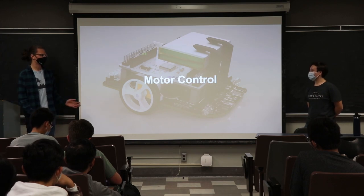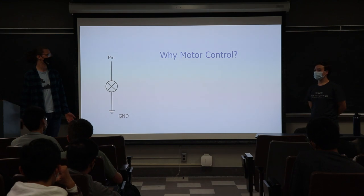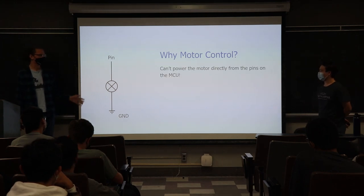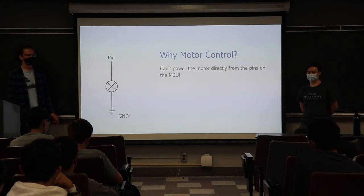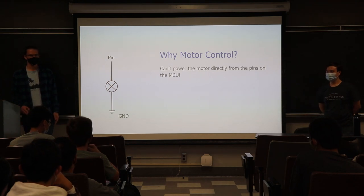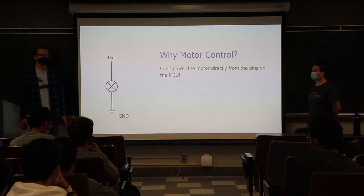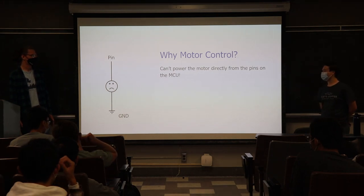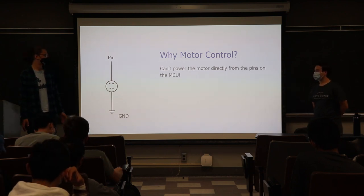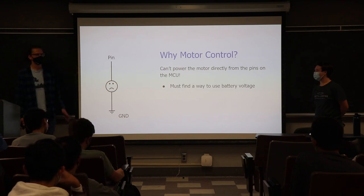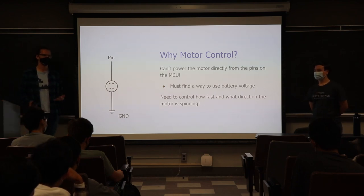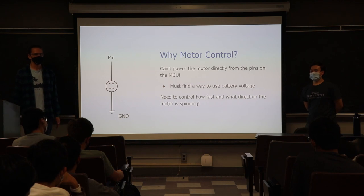So we have motors, but how are we going to actually use them? You might think we can hook directly to a microcontroller pin, but that won't work. First, the microcontroller only operates at 3.3 volts, and we need at least 6 volts. Second, it can't draw enough current from the microcontroller to power the motor. And third, connecting directly to a pin means we can't control direction or speed. That's what falls under the concept of motor control.